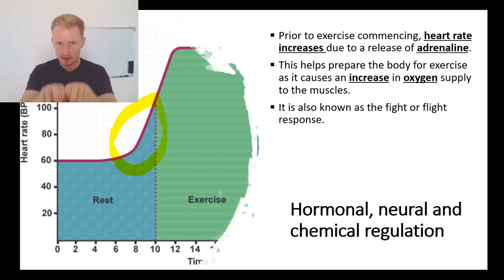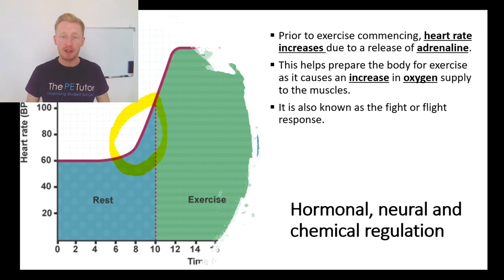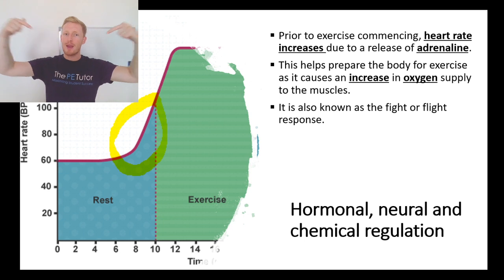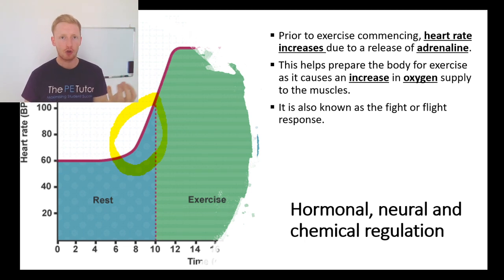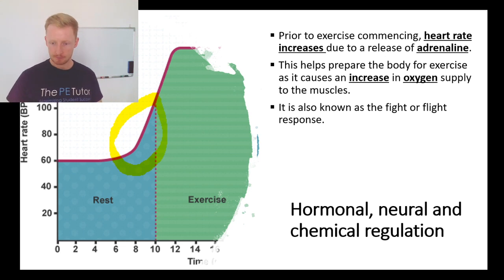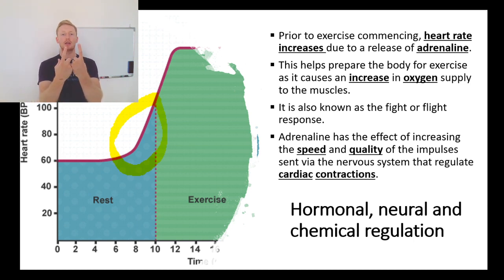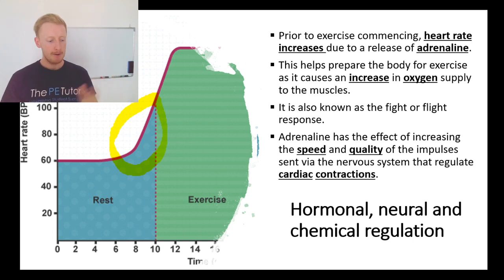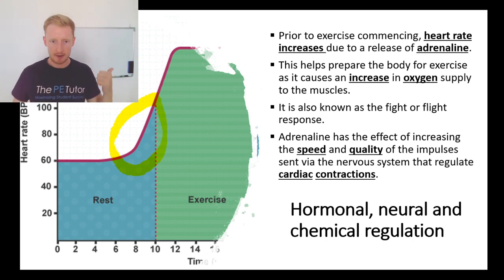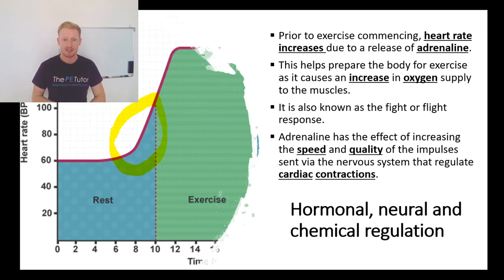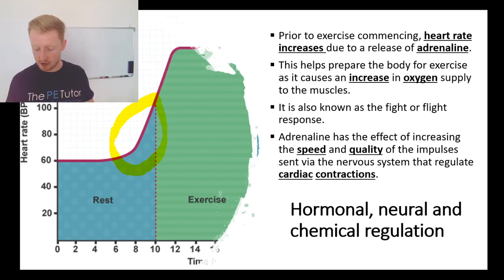This helps prepare the body for exercise because we've now got a heart beating harder and faster, flooding our body with oxygenated blood before we've even moved - pre-empting the demand for oxygen that's about to come. When we do eventually start to exercise, oxygen is already on its way inside the muscle towards the mitochondria to get into aerobic energy sooner. It's also known as the fight or flight response - this spike in adrenaline gets you ready for the fight to come or helps you run away quickly.